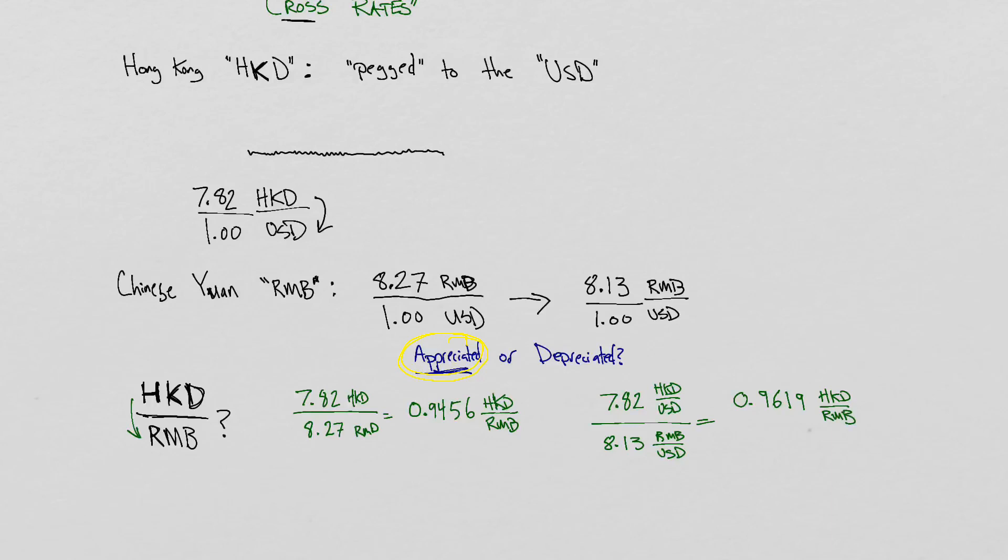And so, what do you think? Has the Hong Kong dollar appreciated or depreciated relative to the Chinese yuan? And the answer is that the Hong Kong dollar has depreciated against the Chinese yuan. Here we see one Chinese yuan at the beginning buying 0.94 Hong Kong dollars. But then later, one Chinese yuan buys more, 0.96 Hong Kong dollars. So the yuan has gotten stronger. And in other words, the Hong Kong dollar has depreciated in value against the Chinese yuan.